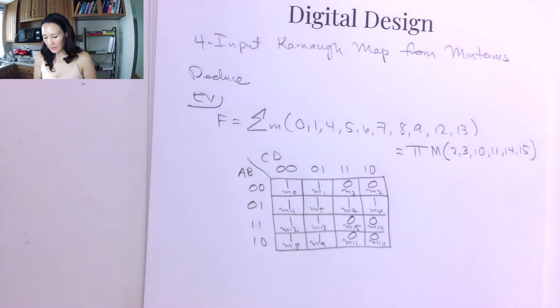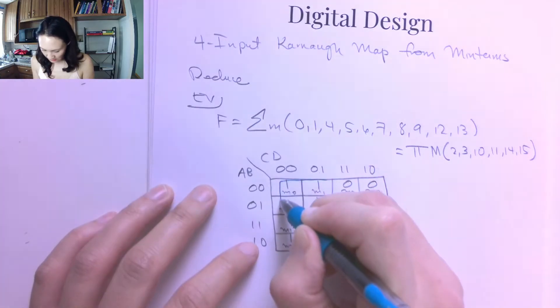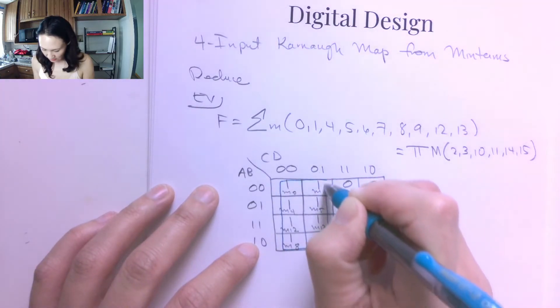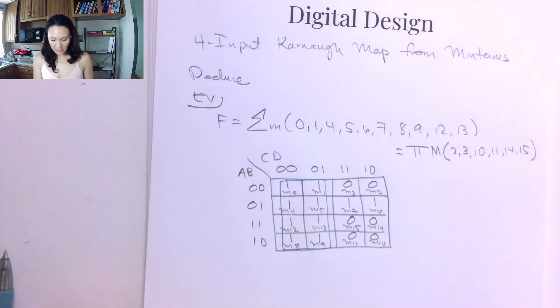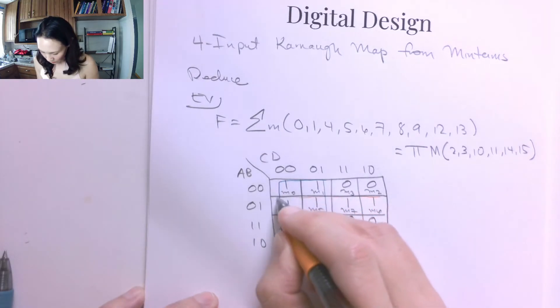But we're going to get the best simplification the more bits we can group together. So be careful because we can't group groups of 5 or 6. We can only do 2, 4, 8, and 16. So it has to be in 2 to the n form. So let's go ahead and make this nice big giant group of 8 right there.